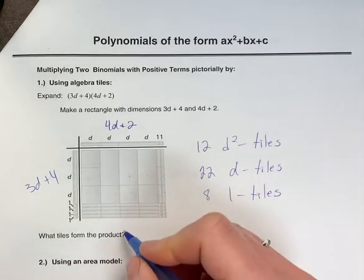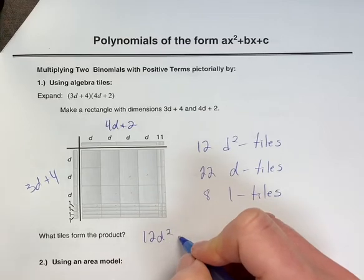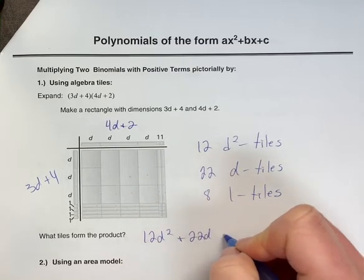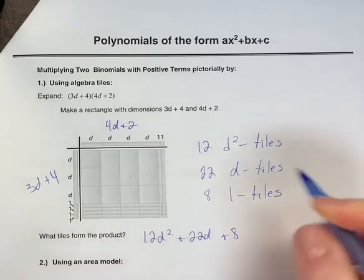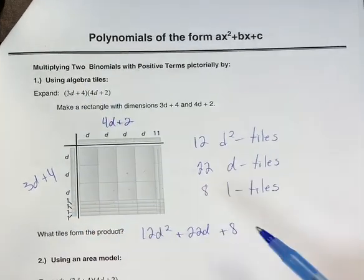So what tiles do these products form? If we put these together, we have 12d squared plus 22d plus 8. So this would be, if we multiplied these two factors together, what the product would be.